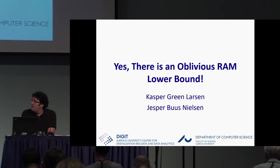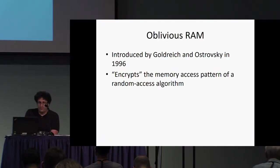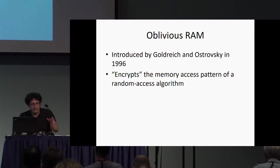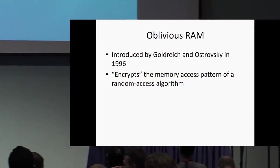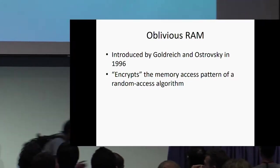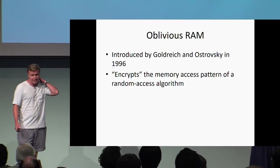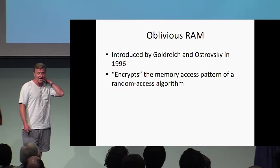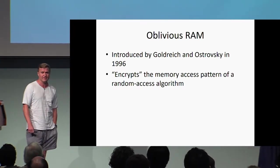Let's dive into what is an Oblivious RAM. It's a technique that was introduced in 1996 by Goldreich, Ostrovsky, which basically encrypts the access pattern of a random access algorithm.